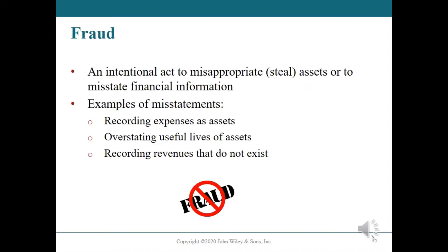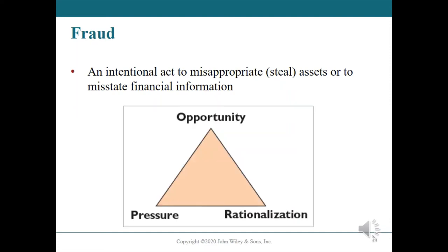Fraud involves intentional actions taken to misappropriate or steal assets or misstate financial information. It is the intentional or deliberate nature of the actions that distinguishes fraud from errors. Examples of misstatements include recording expenses as assets, overstating useful lives of assets, or recording revenues that do not exist. Fraud is most likely to occur when three main factors are present: opportunity, pressure, and rationalization.